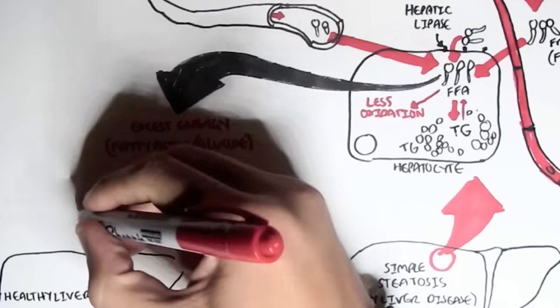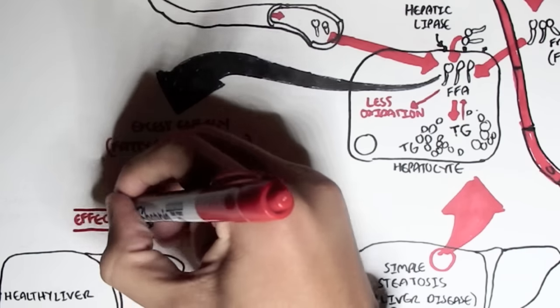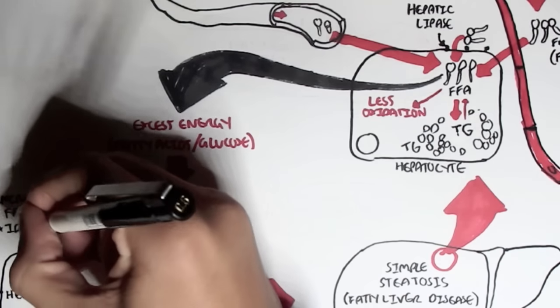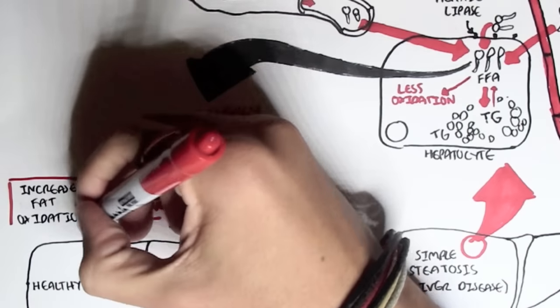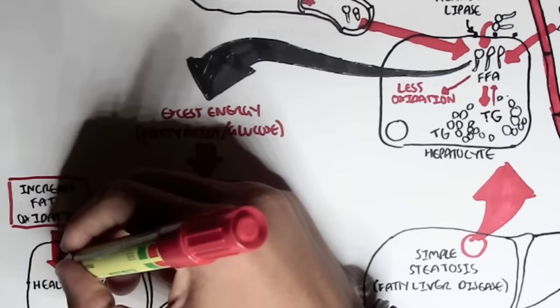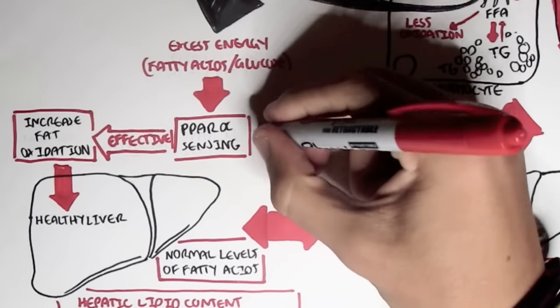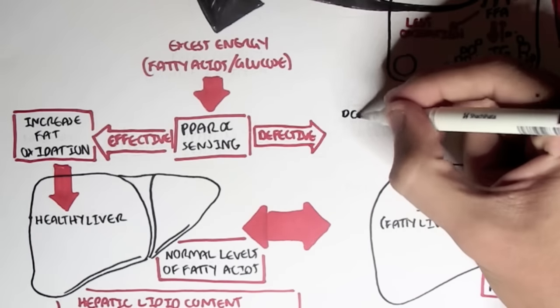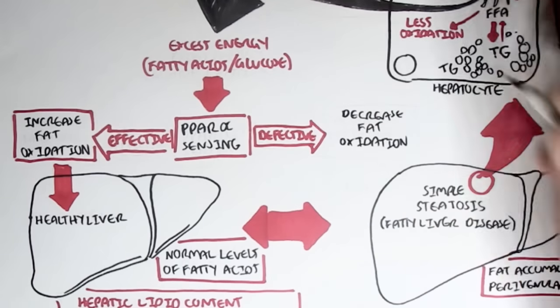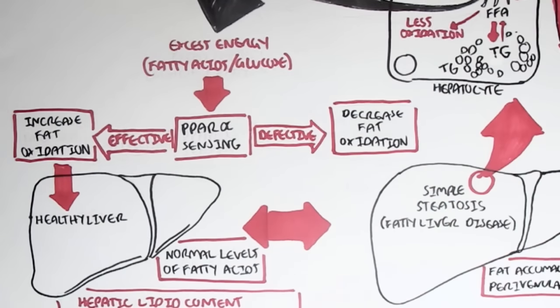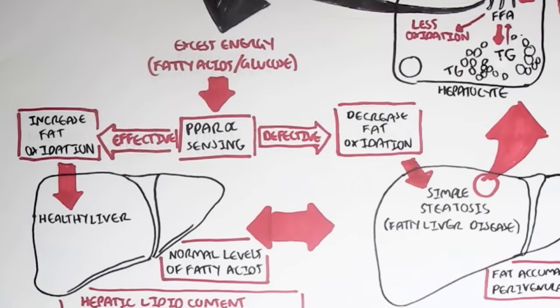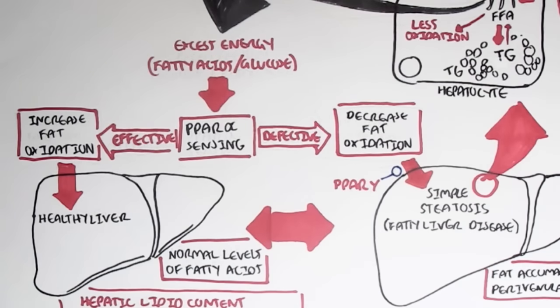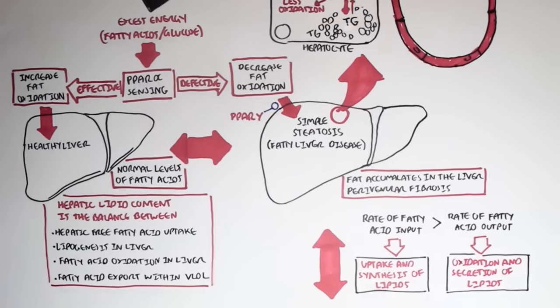So if this PPAR alpha sensing is effective, it will increase the fat oxidation when we have excess energy. And so with increased fat oxidation, it means that we can get rid of all this excess fat and we have a healthy liver. However, if this PPAR alpha sensing is defective, this will decrease fat oxidation. And so fatty acids or excess energy accumulates within the liver. And this will lead to steatosis or simple steatosis. The PPAR gamma actually stimulates this decreased fat oxidation process which will lead to steatosis. Hope that made sense.